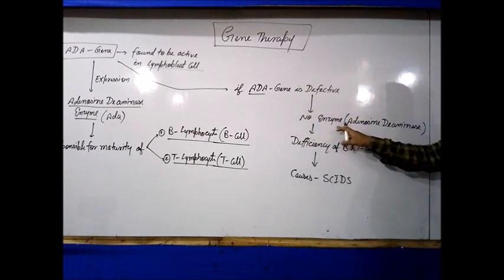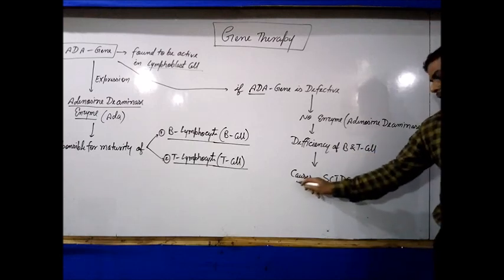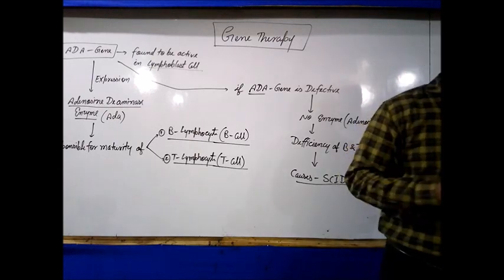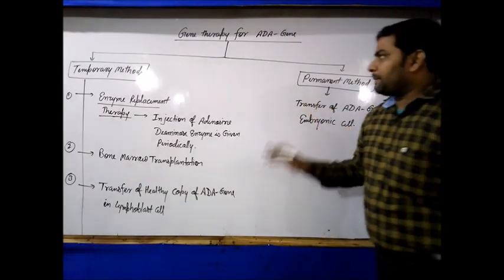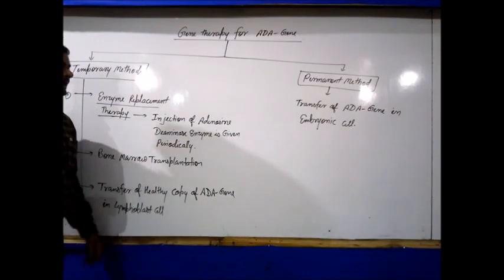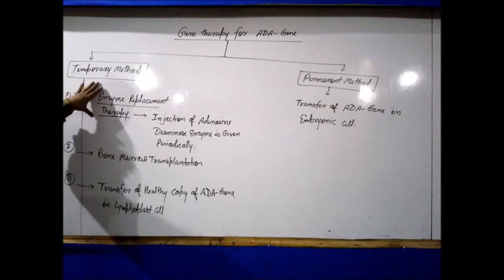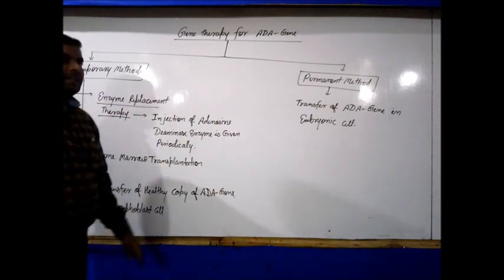If this gene is defective, the enzyme is not produced. If the enzyme is not produced, B and T cells will be reduced, and when they are reduced, it causes SCID. There are different methods to treat this. The first option is enzyme replacement — because the gene cannot produce adenosine deaminase, we inject the enzyme directly into the patient.